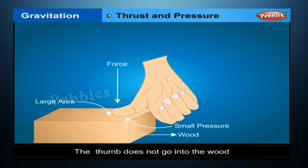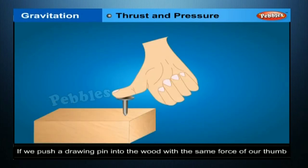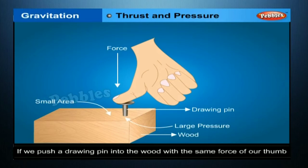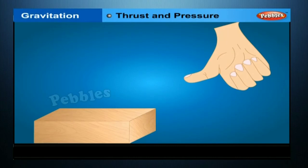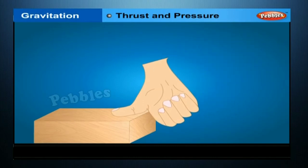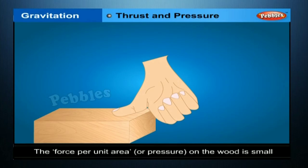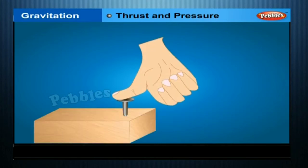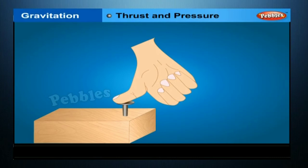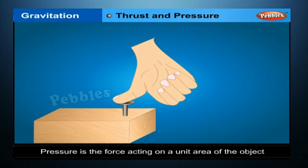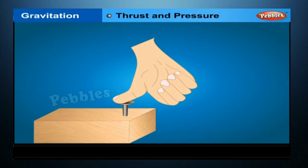Thrust and pressure: if we push hard on a piece of wood with our thumb, the thumb does not go into the wood. But if we push a drawing pin into the wood with the same force, the drawing pin goes into the wood. Our thumb does not go in because the force falls on a large area, making the pressure small. The drawing pin goes in because its sharp tip concentrates the force on a very small area, making the pressure very large.